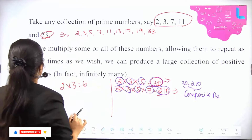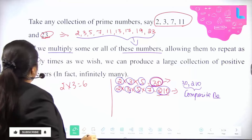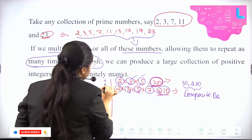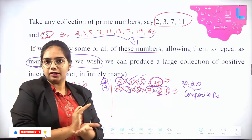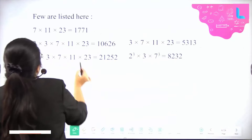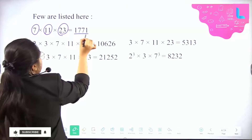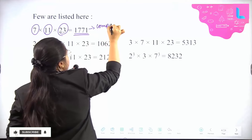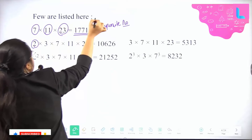If we multiply some of these prime numbers, allowing them to repeat as many times as we wish, you can take as many prime numbers as you want — it is a large collection — and what you get is always a composite number. For example, 7, 11, and 23 are prime numbers; multiplying them gives 1771, which is a composite number.